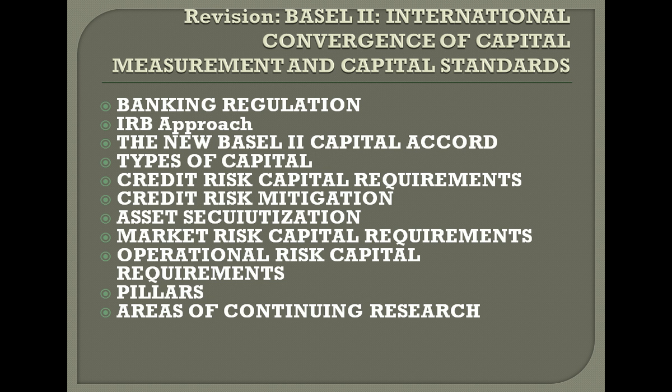Basel 2 has three pillars. Pillar 1 is a highly quantitative assessment of capital requirements for banks, focusing on credit risk, operational risk, and intertwined capital adequacy. Pillar 2 involves regulators. Pillar 3 focuses on capital markets as external monitors, ensuring market discipline.